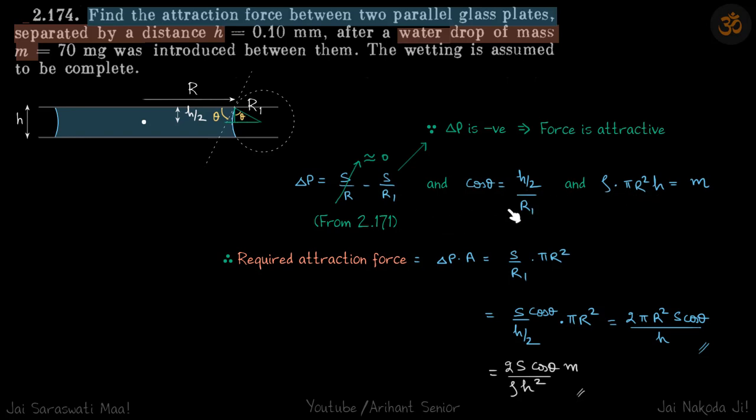From these three equations, we can put the value of R1 and get the value of excess pressure. Our required attraction force is delta P times area. The area is the top surface, the area of the plate which is in touch with water, which is pi r squared. Delta P is S/R1, and area is pi r squared.